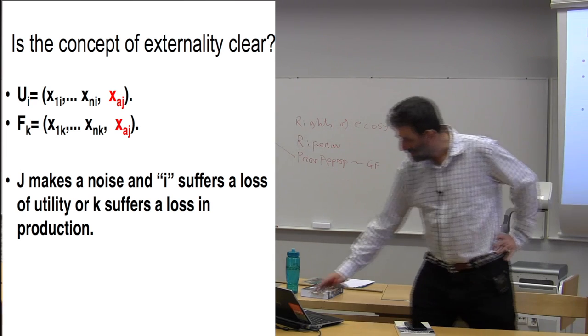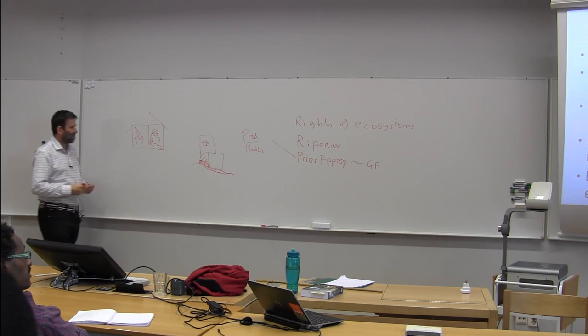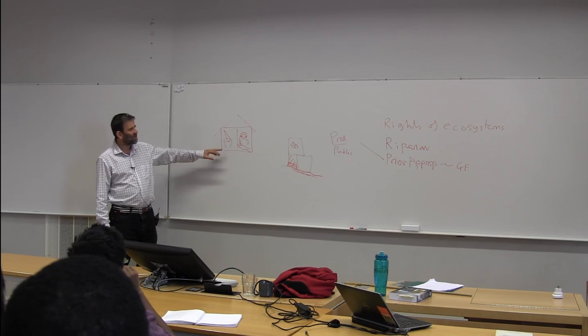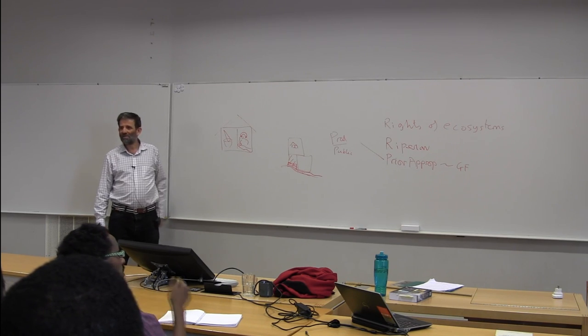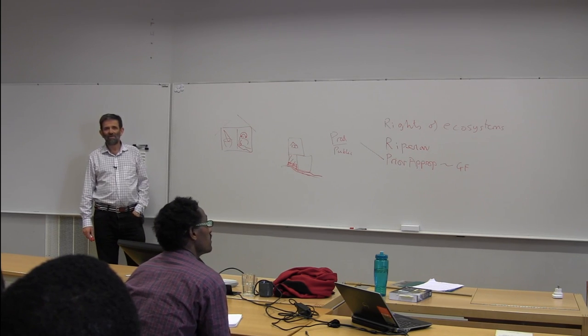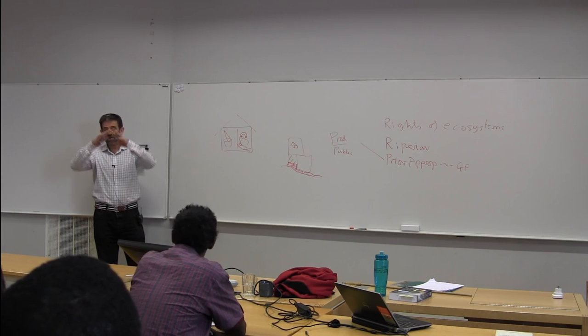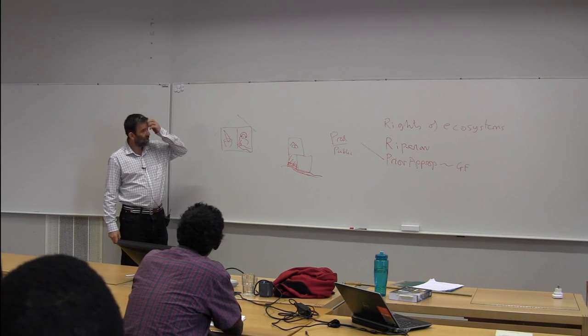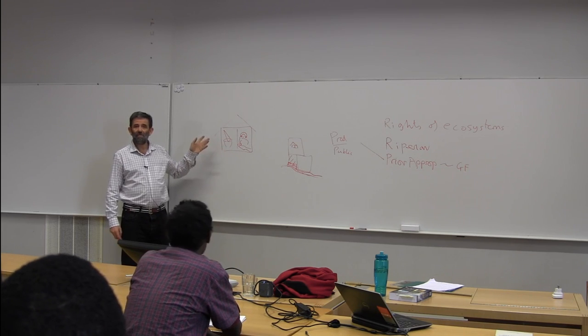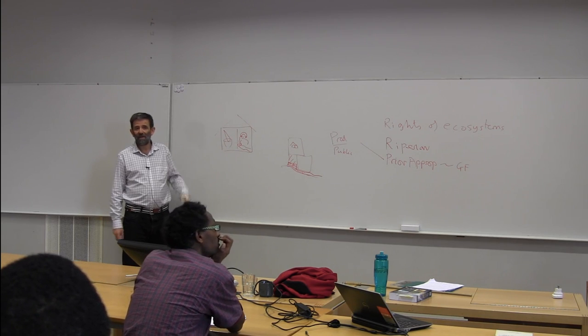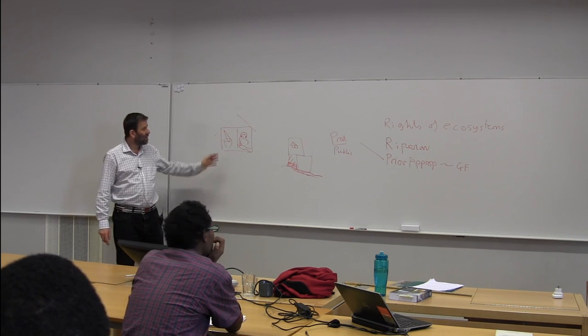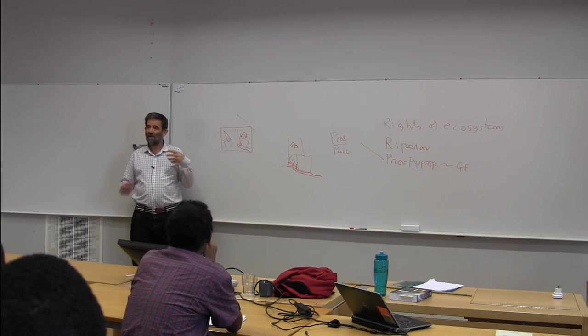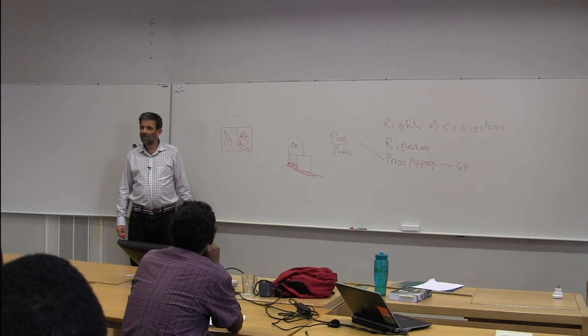You've got the utility function of individual I. And it depends on all kinds of things, like how much labor I spend, how much sugar and ice cream and cheese I eat. And then suddenly my utility depends on, like, what you do, if you smoke, for instance. And, well, that's nothing I can control. So, therefore, there's this part of my utility being controlled by you and then, well, so that's an externality.